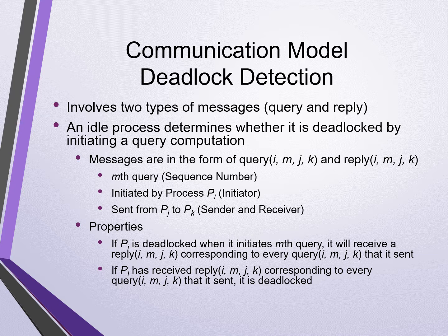The communication model deadlock detection technique uses two types of messages: queries and replies. An idle process determines whether it is deadlocked by initiating a query computation. Messages are in the form of query IMJK and reply IMJK, where M is the sequence number indicating the Mth query, I indicates the initiating process PI, and J and K are the sender process PJ and receiver process PK, respectively. There are two properties: if PI is deadlocked when it initiates the Mth query, it will receive a reply IMJK corresponding to every query IMJK that it sent — therefore it is deadlocked.